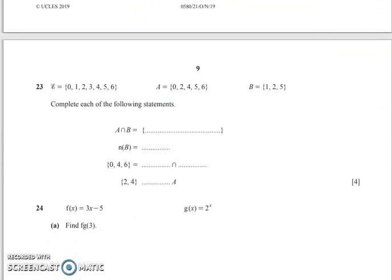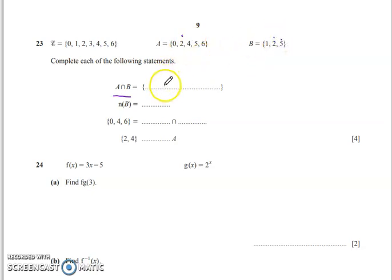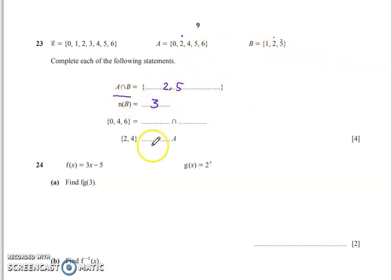The next question is based on set theory. A intersection B means what is common between A and B. You can see that 2 is common and 5 is common, so A ∩ B = {2, 5}. n(B) means the number of elements in B — there are three — so n(B) = 3. Now {0, 4, 6} equals the intersection of what?